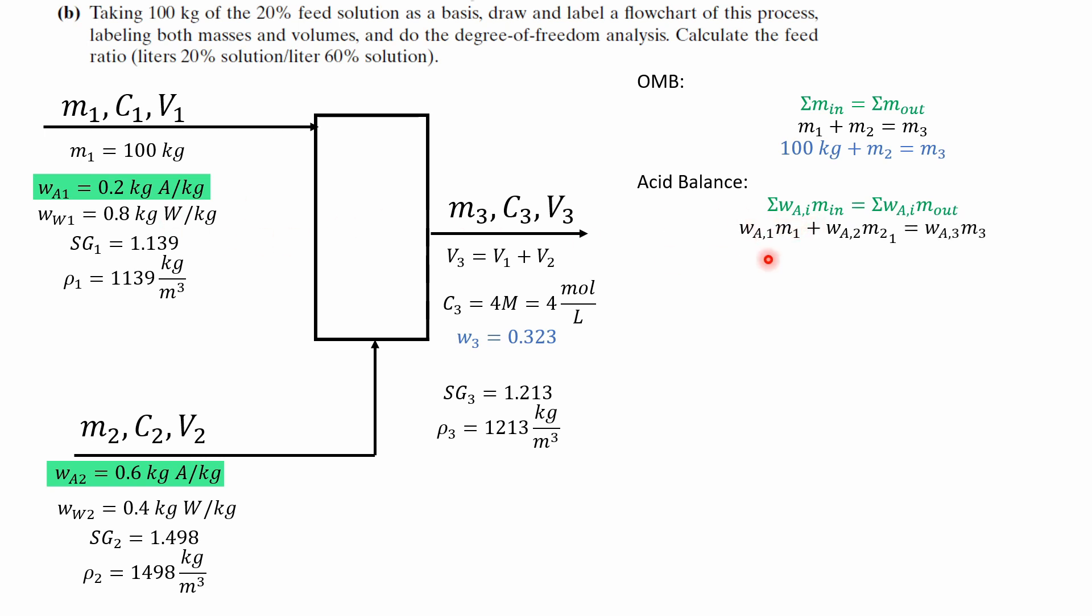And what this means is we simply multiply the mass fraction by the mass of the stream and we have it for stream 1 but we don't have it for stream 2 so that's why we're using these labels.